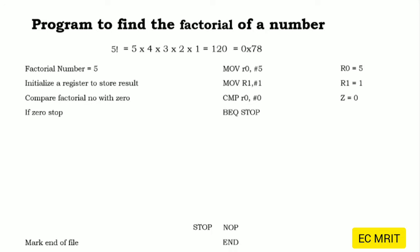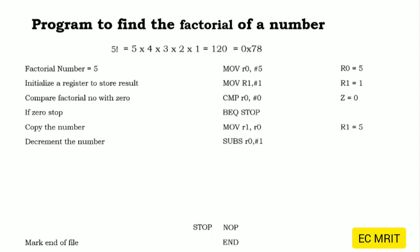Since R0 is not equal to 0, we continue the program. We copy the same number into the result register R1, so now both R0 and R1 hold the value 5. Next we decrement R0 by 1, so R0 becomes 4. We need to do this because we need to multiply 5×4. Before multiplication we will compare this value with 0.